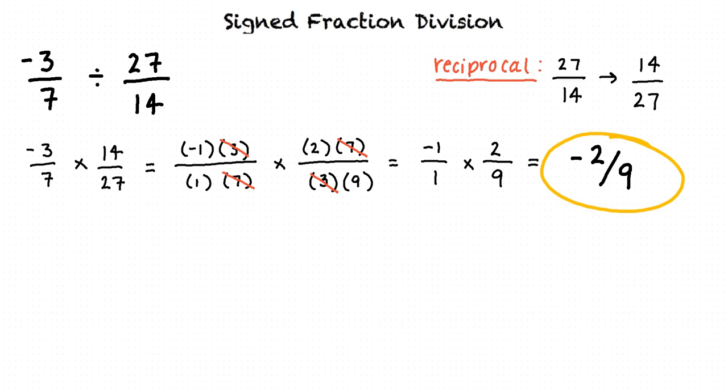The 2/9 is negative because we multiplied a positive number by a negative number, which results in a negative number. That's right.